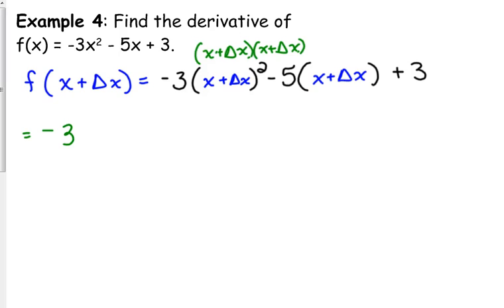So, we have a negative 3 in front of that. Let's foil this out. First times first is x squared. The outside gives us x times delta x. The inside gives us x times delta x. So, we have two x times delta x's. And then, we have delta x times delta x. So, that's delta x squared.